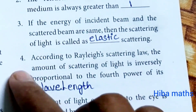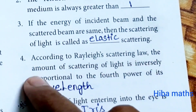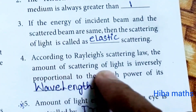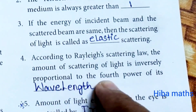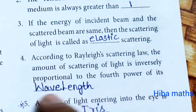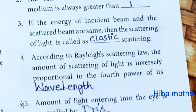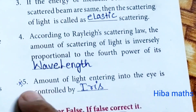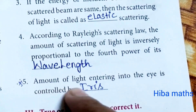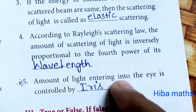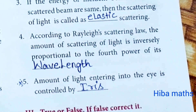Fourth question: according to the Rayleigh scattering law, the amount of scattering of light is inversely proportional to the fourth power of its wavelength. Fifth question: the amount of light entering into the eye is controlled by the iris.